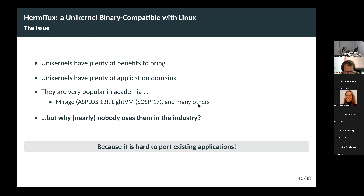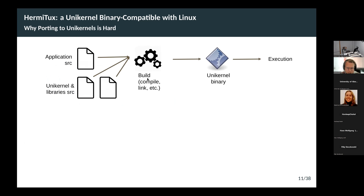When I did this work in 2019, one clear explanation was that it's very hard to port existing applications to unikernels. To illustrate that, let me show you how you build and run an application with a unikernel: you need the sources of your application, the sources of the libraries it depends on, and the sources of the unikernel itself. You compile all of this and link it into a single binary, then run it on top of a hypervisor. There are many scenarios in which this is complicated or impossible.